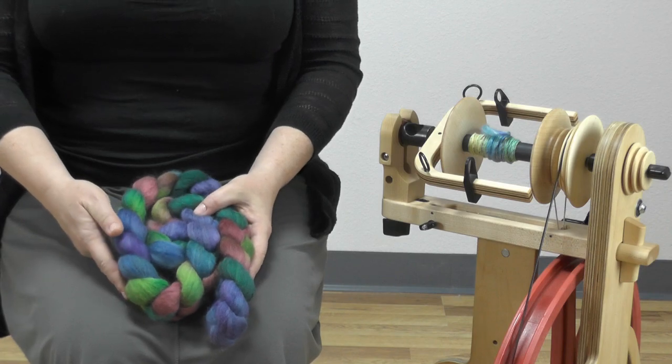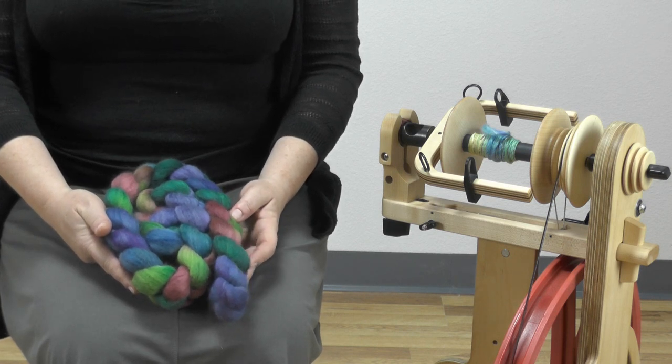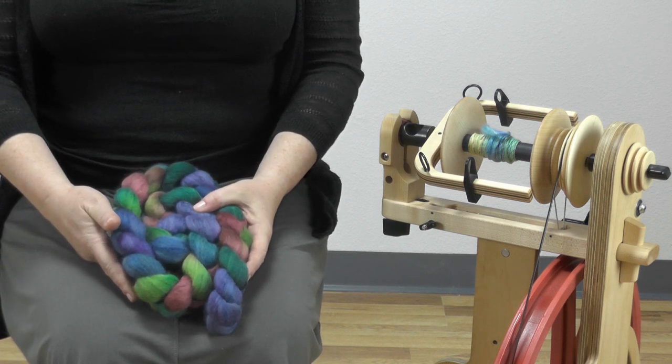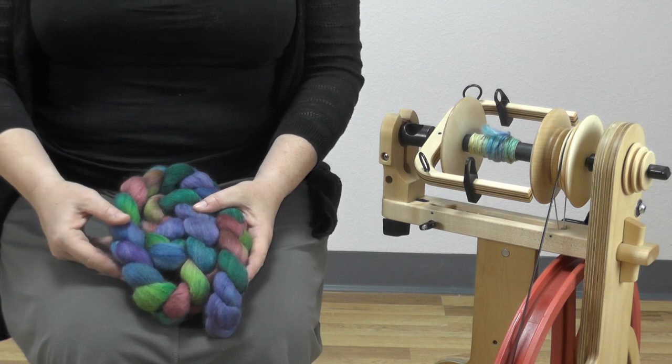Today I'm going to be spinning Polworth silk from Sweet Georgia Yarns in a colorway dyed for Shack Spindle Company called Rocky Mountain Meadow.